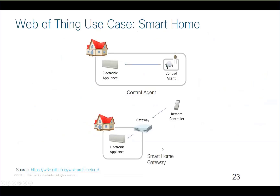How it works in W3C: before defining standards, they define where the architecture will be used. They define common use cases from daily life, such as the smart home. In a smart home, you can have different scenarios. For example, a control agent scenario: you have an air conditioner and a sensor that detects 30 degrees Celsius and sends a command to turn on the air conditioner. You also have a smart home gateway where you can use a smartphone to send commands to electronic appliances over the internet through a gateway that manages devices.